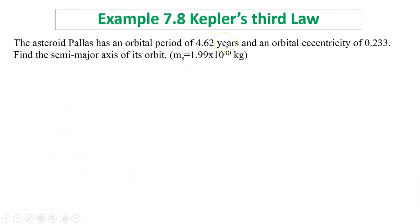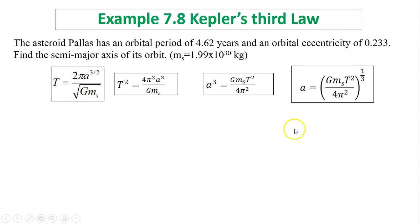Example 7.8, Kepler's third law. Kepler's third law relates the period with the semi-major axis. So an asteroid has an orbital period of 4.62 years. Remember in your calculation, the period has to be in seconds, so we have to convert years into seconds. We can use the third law. Eccentricity is not part of the third law, so this is not useful information. Simply use the third law to figure out what A is.